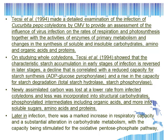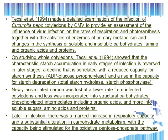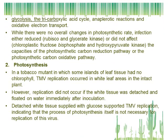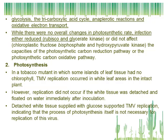Later in infection, there was a marked increase in respiratory capacity and a substantial alteration in carbohydrate metabolism, with the capacity being stimulated for the oxidative pentose phosphate pathway, glycolysis, the tricarboxylic acid cycle, anaplerotic reactions, and oxidative electron transport. While there were no overall changes in photosynthetic rate, infection either reduced or did not affect the capacity of the photosynthetic carbon reduction pathway or the photosynthetic carbon oxidative pathway.